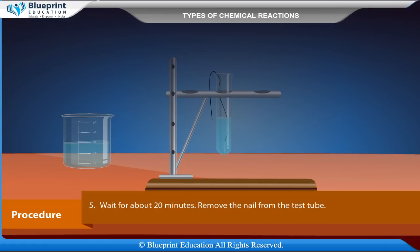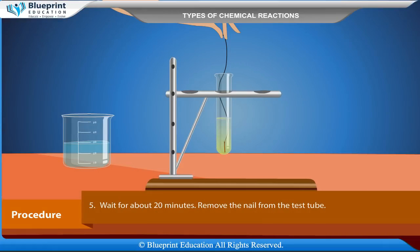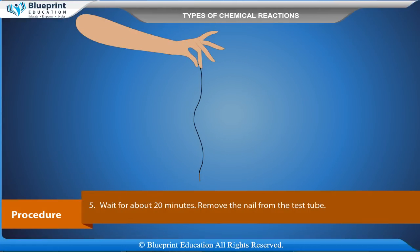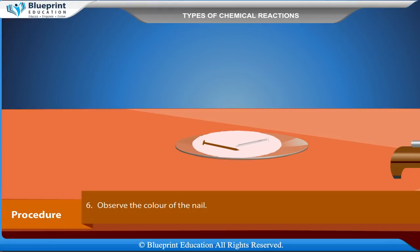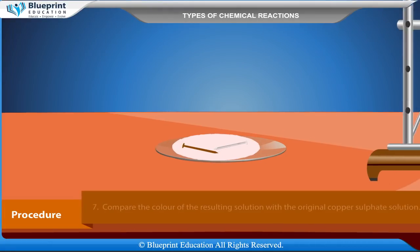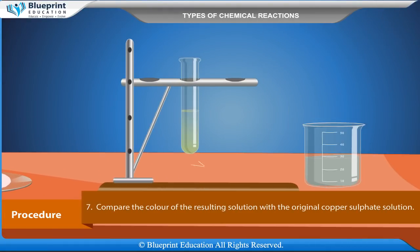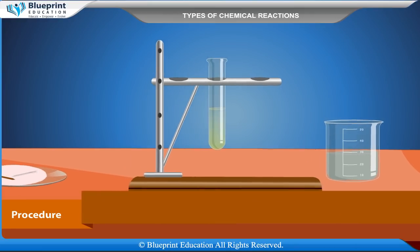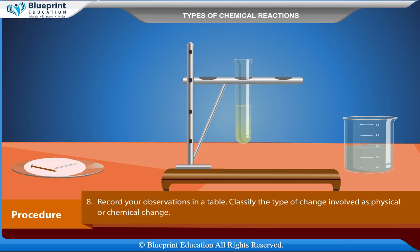Wait for about 20 minutes. Remove the nail from the test tube. Observe the colour of the nail and compare the colour of the resulting solution with the original copper sulphate solution. Record your observations in a table and classify the type of change involved as physical or chemical change.